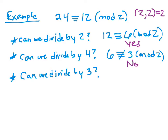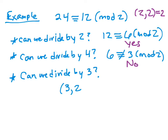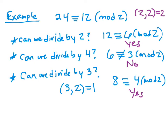Can we divide by 3? The GCD of 3 and the mod 2 is 1, so by the theorem it's guaranteed to work. Dividing gives 8 congruent to 4 mod 2, which is indeed true. So in the first case it worked but wasn't guaranteed. In the second case it didn't work, and there was no expectation it would since the GCD wasn't 1. In the third case, the theorem guaranteed we could divide by 3.